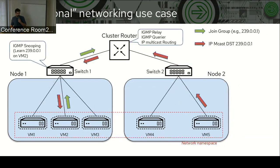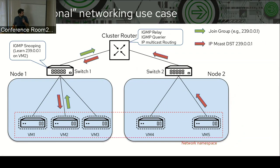What happens in a traditional networking use case? If you notice here, the switches are outside the nodes, assuming they're physical switches. If we enable IGMP snooping, IGMP relay, querier, and multicast routing on the cluster router, then switch one will learn the IP multicast group from the IGMP report. And then when traffic arrives, it's nicely forwarded to the VM that's interested in the traffic — so it's optimal forwarding.